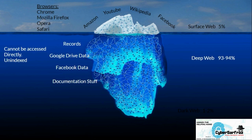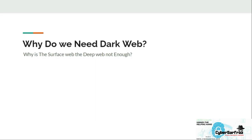Moving to the dark web section — the dark web is the subset of the deep web which is intentionally hidden. It can be accessed only by using a specific browser: Tor. No one really knows the size of the dark web, but most estimates put it around 5% of the total internet. After briefly learning about the dark web, one question arises: why do we actually need the dark web? What's the problem with the surface web? There are many points which can be considered as the answer — we'll discuss some of them briefly.